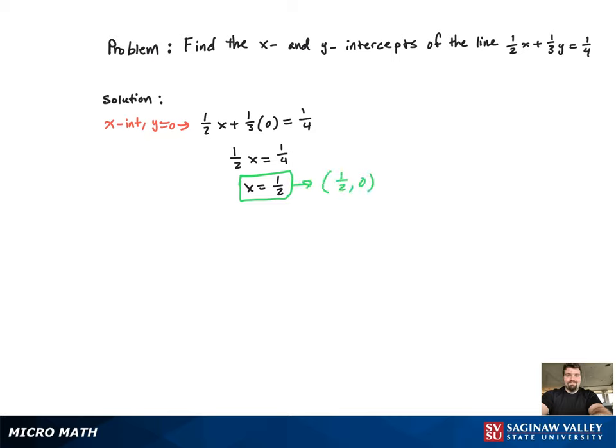Now we're going to find the y-intercept. So we're going to plug 0 in for x. Now we get 1 third y equal to 1 fourth. Multiply both sides by 3, and you get y equal to 3 fourths. And that corresponds to the point 0 comma 3 fourths.